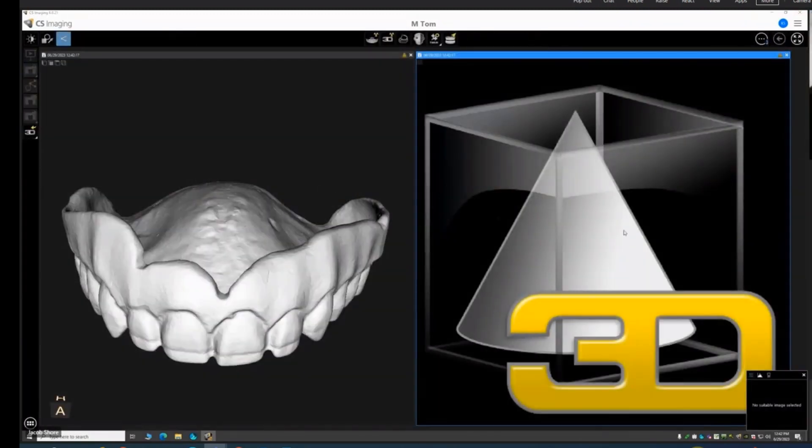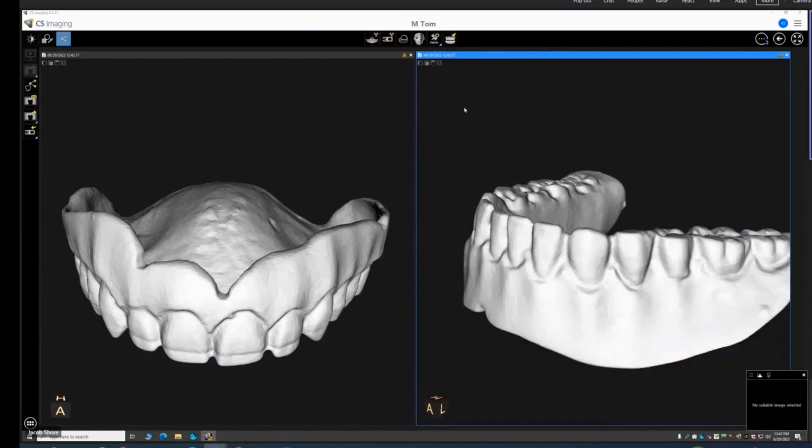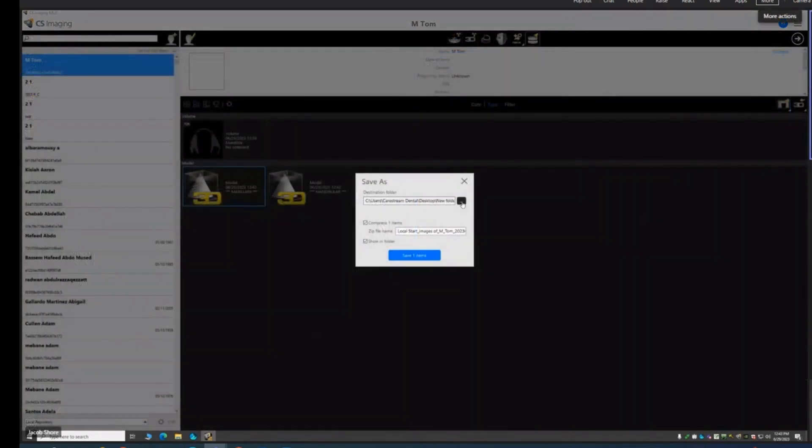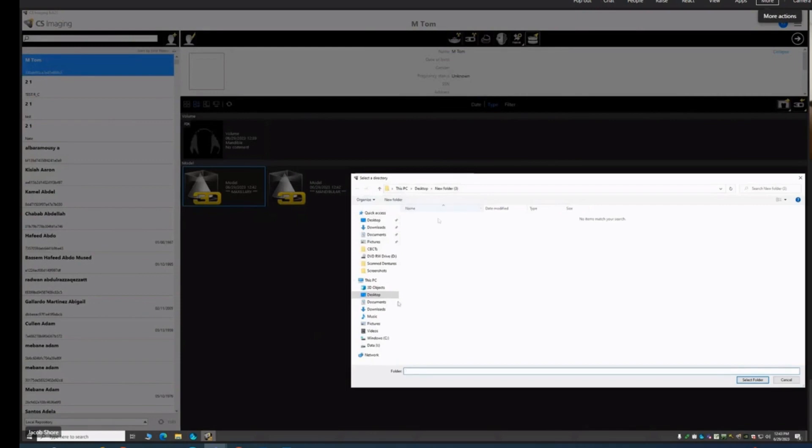When you are satisfied with the scan, you can accept or reject it. If you choose to accept it, the STL files are generated and stored in the patient's chart, labeled with the date and time. To export the files, you can perform a simple basic export.